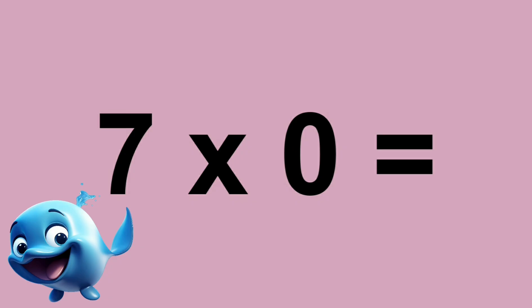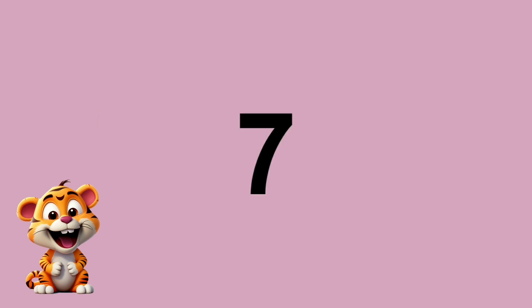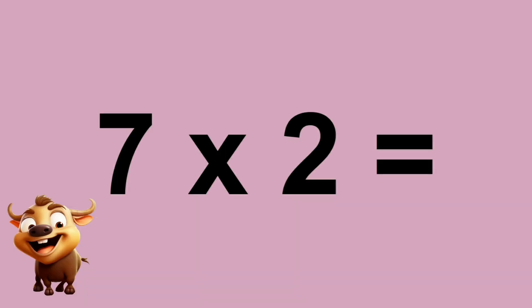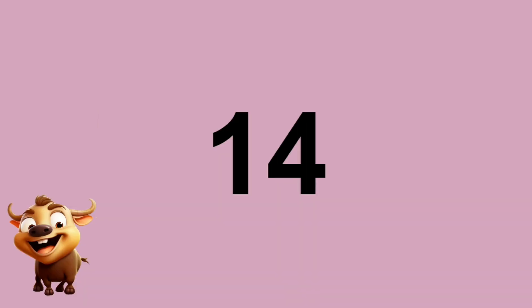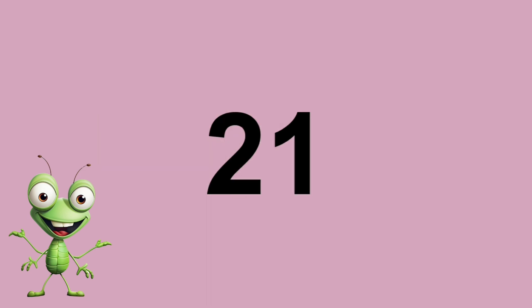Seven times zero equals zero. Seven times one equals seven. Seven times two equals fourteen. Seven times three equals twenty-one.